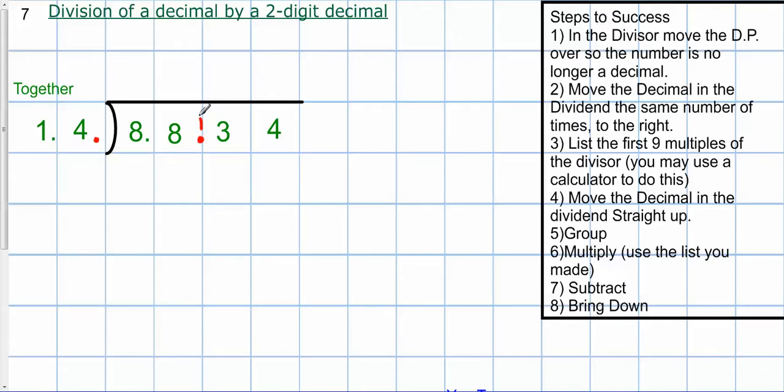So, as Paula Abdul told us, straight up. That's what I do with it. So I can cross this off, cross this off. So again, what I'm going to do, the same thing I did when I had double-digit divisors. List the first multiples.